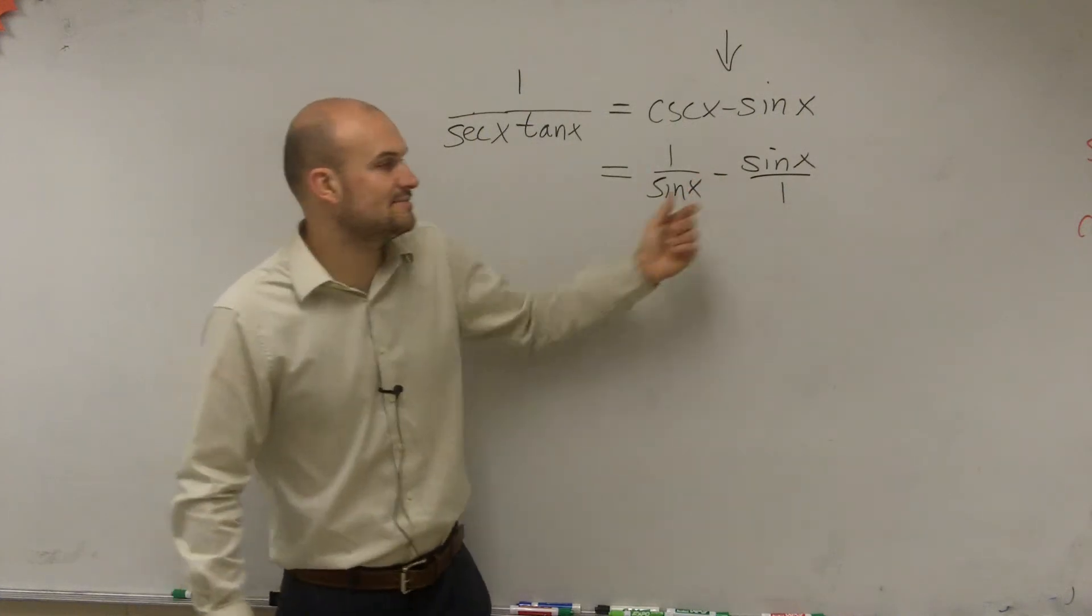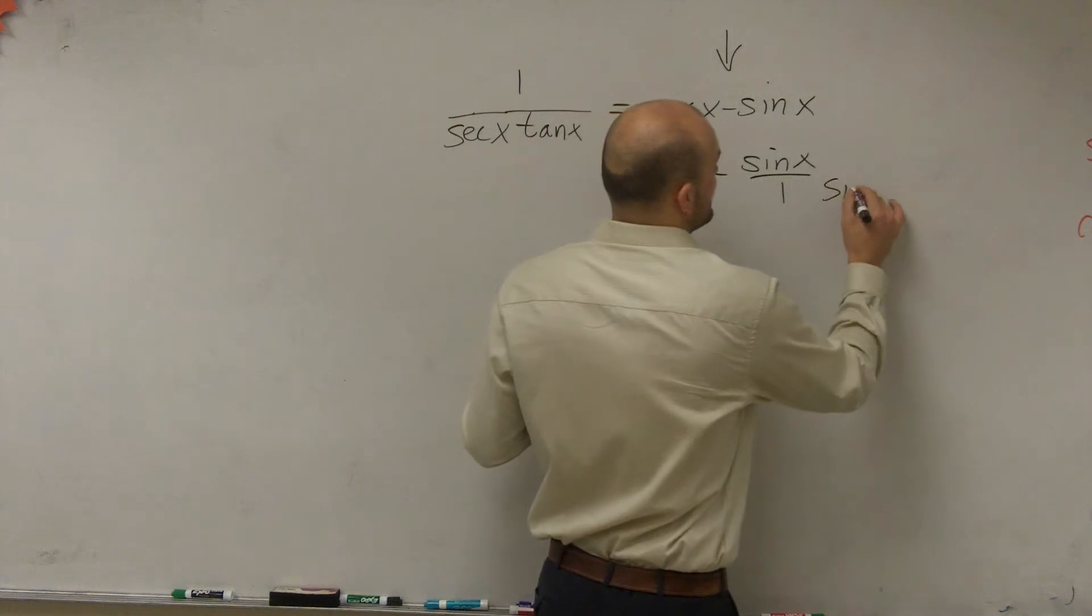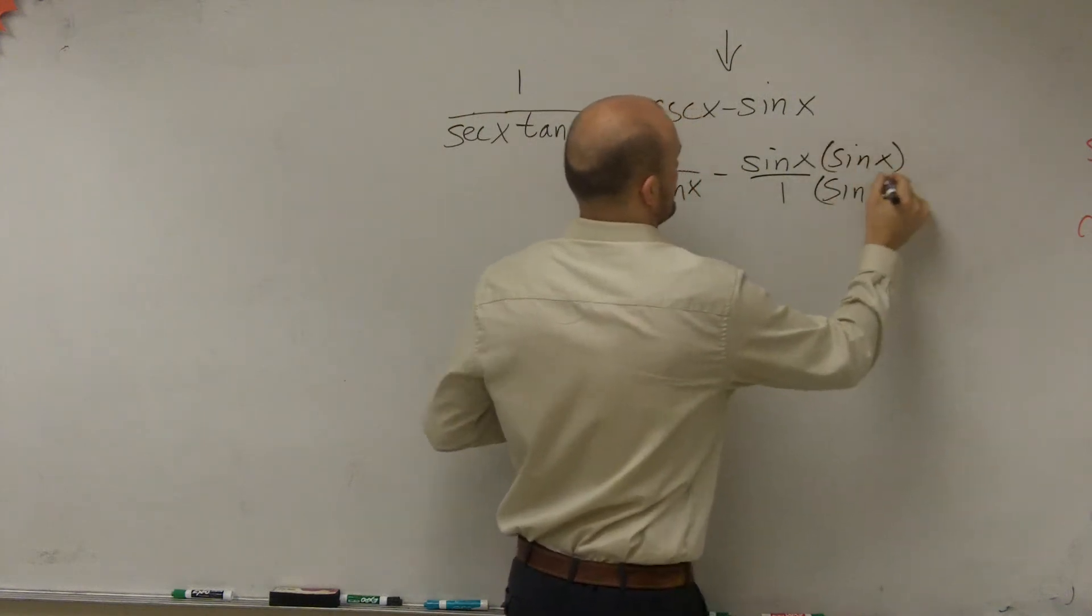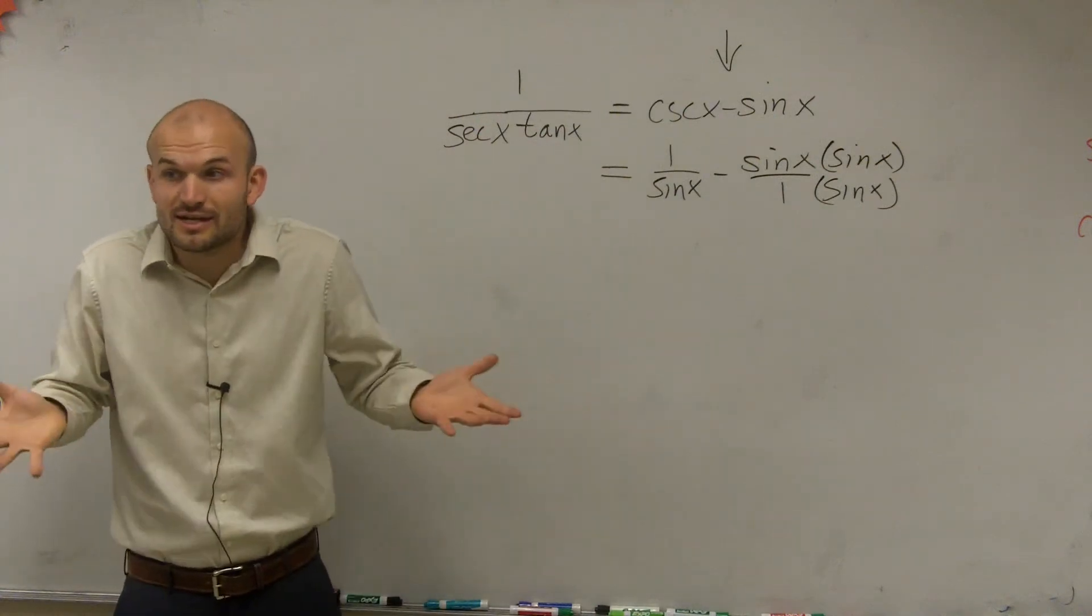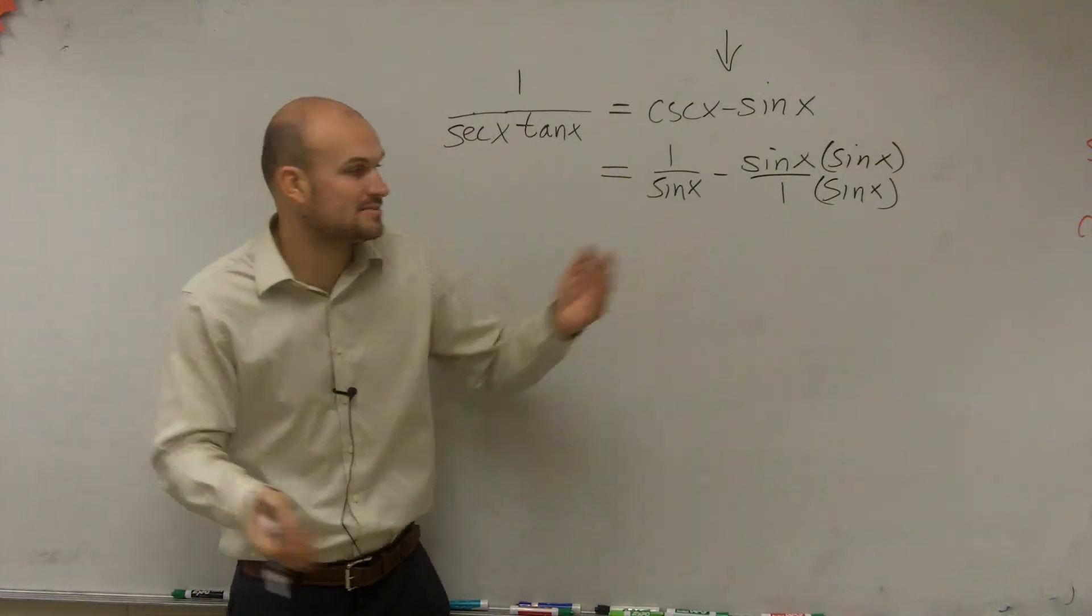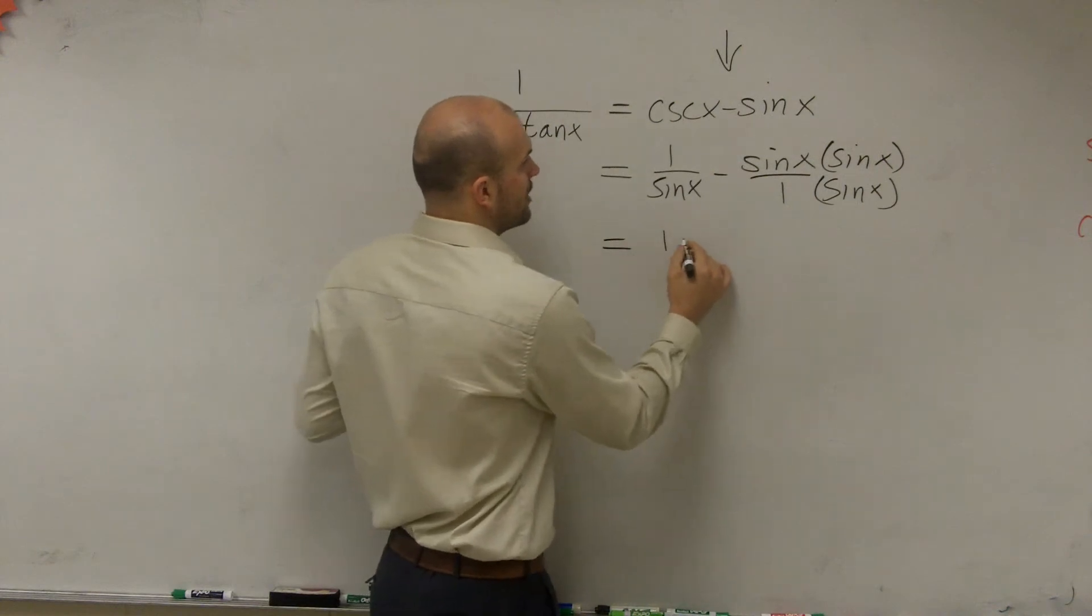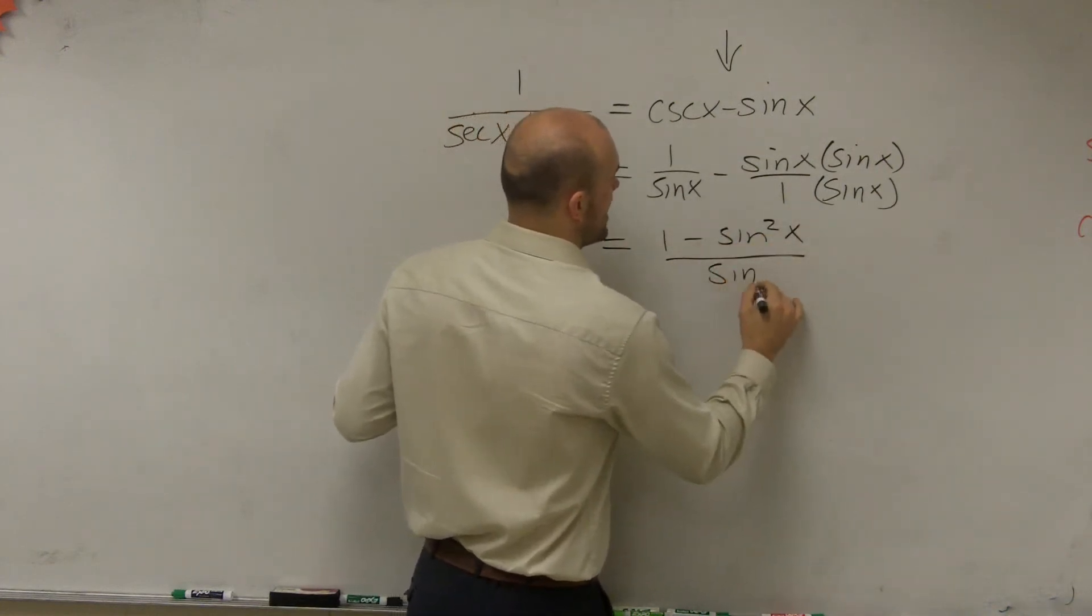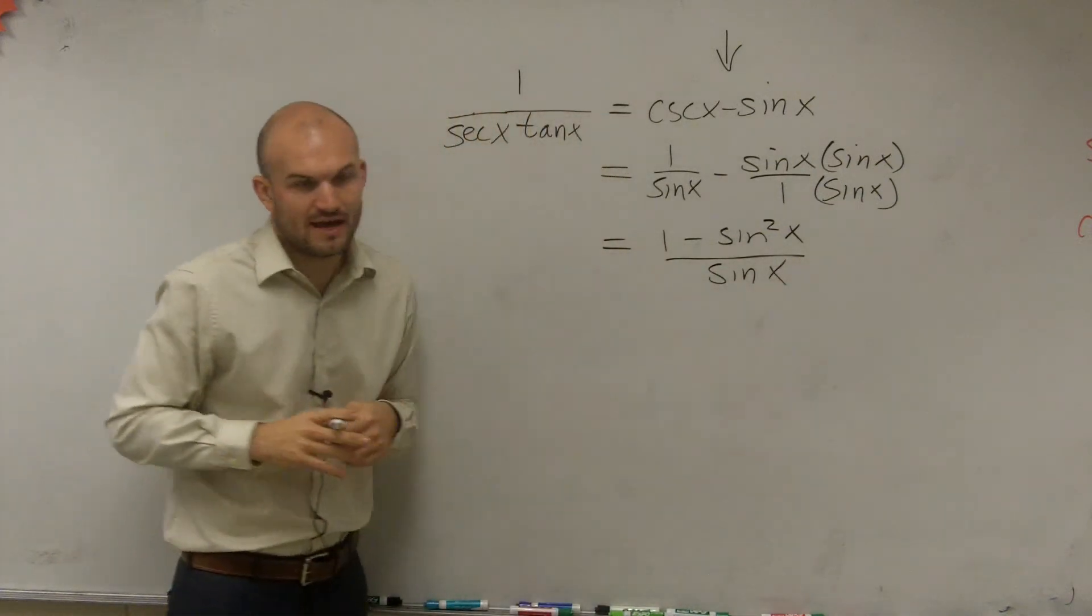So to get these to be the same denominator, I need to multiply by sine of x over sine of x. Because you've got to subtract them, so you've got to have the same denominator. So therefore, that's 1 minus sine squared of x divided by my common denominator, which is sine of x.